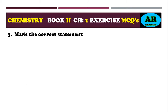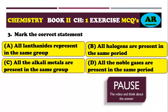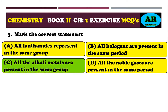Third MCQ: mark the correct statement. Option alpha: all lanthanides are present in the same group. Option beta: all halogens are present in the same period. Option charlie: all alkali metals are present in the same group. Option delta: all noble gases are present in the same period. The correct option is charlie — all alkali metals belong to group 1A.